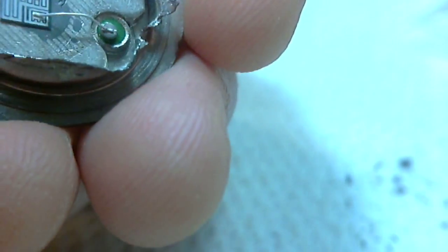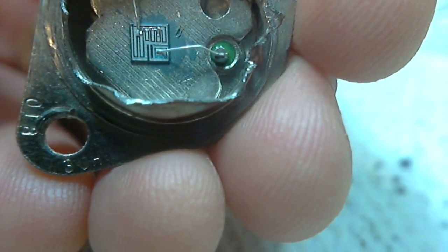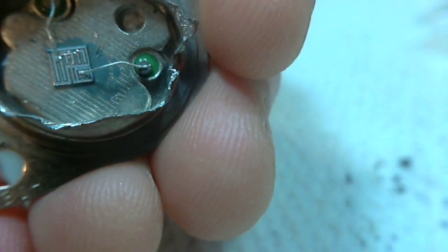But even under my magnifier, you can see the size of my fingers here, even under this pretty good magnifier, I still can't really make out the details on there. You can see how the two leads are brought over.